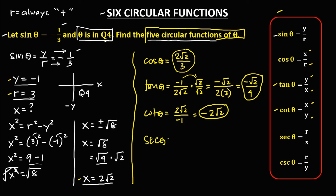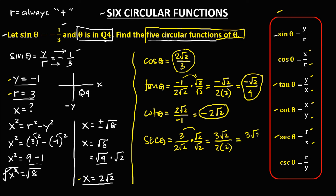For secant theta: secant θ = r over x, so r is 3 over x which is 2√2. We rationalize by multiplying both sides by √2, giving 3√2 over 2 times 2. Therefore, secant θ = 3√2 / 4.